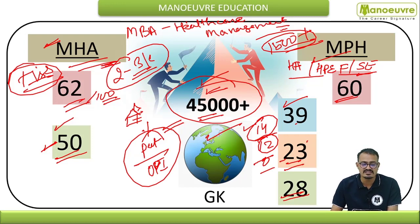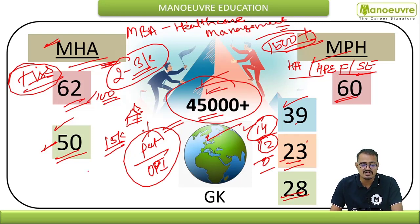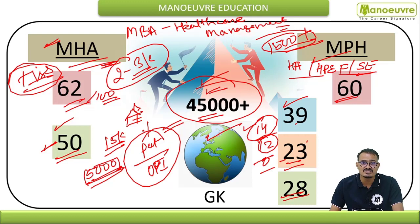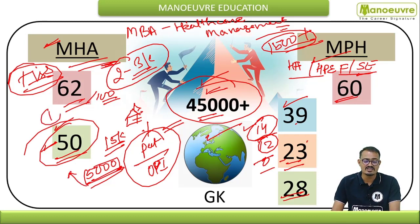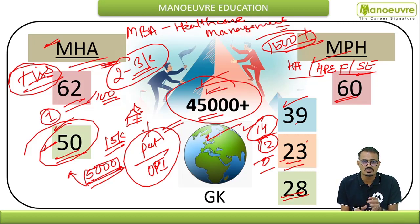Out of 45,000 plus candidates, around 15,000 plus will be selected for the second stage, and thereafter around 5,000 candidates will be selected for the OPI or PI. The MHA program at TISS Mumbai has only 50 seats — this course is only offered at the Mumbai campus, unlike other TISS centers like Tuljapur, Guwahati, and Hyderabad. The competition is extremely high.